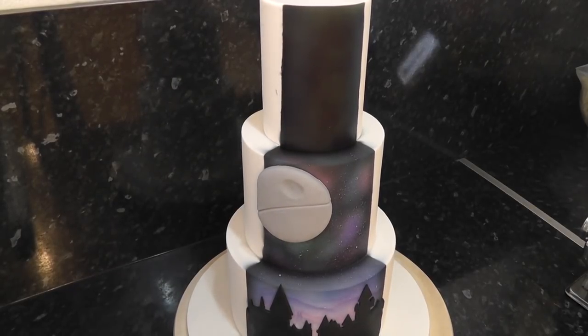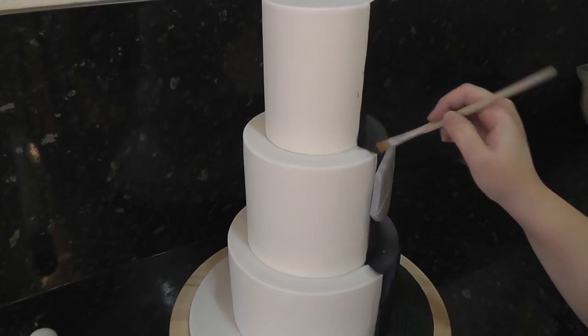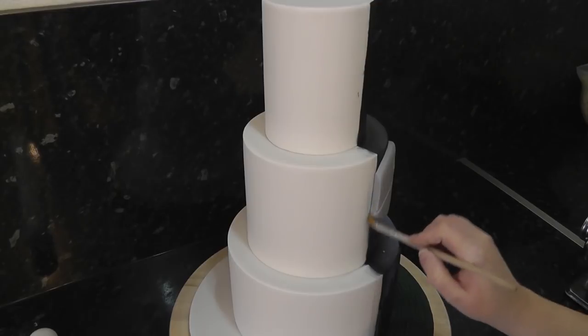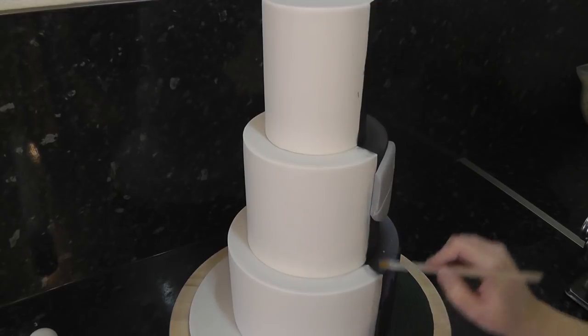I've created a Hogwarts cutout on a previous tutorial, which yep, you've guessed it, I'll leave it linked below. Now that you've got your details on, you'll want to dampen the join of the white cake to the airbrush section.